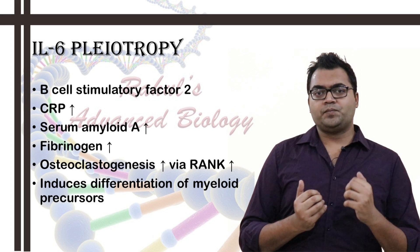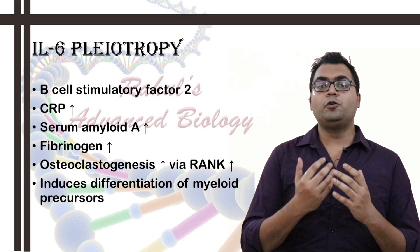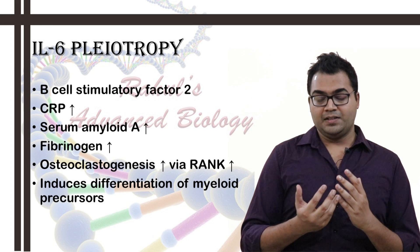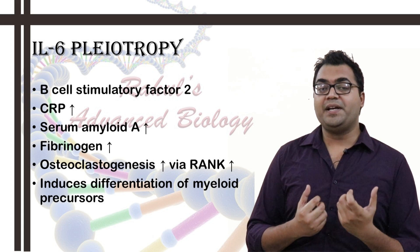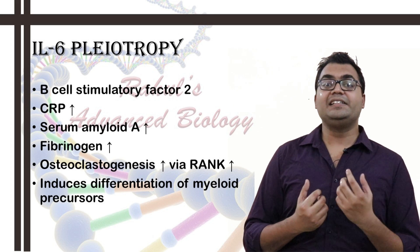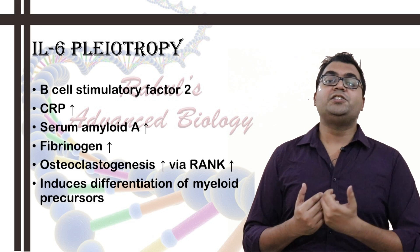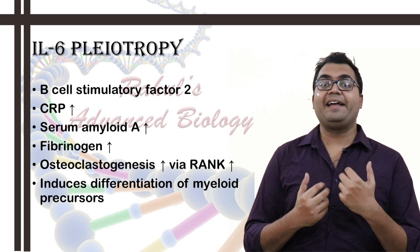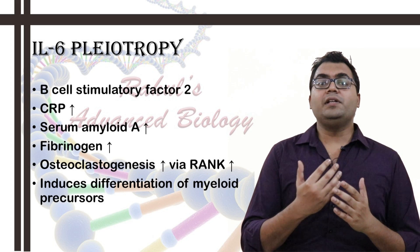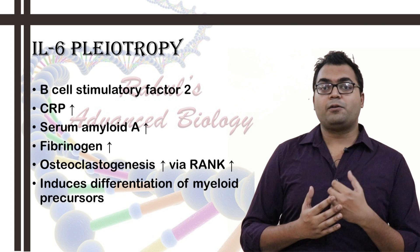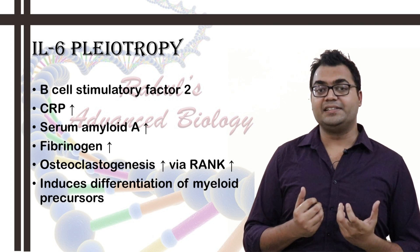IL-6 is also known to be a pleiotropic cytokine, meaning it can have diverse effects — like it could be a precursor for myeloid cells. It could enhance the expression of C-reactive protein, which is the biomarker of inflammation, and other inflammation biomarkers like serum amyloid proteins and fibrinogen. It can also up-regulate osteoclastogenesis, up-regulate the RANK-L pathway — receptor activator for nuclear factor kappa-B — and lead to inflammatory diseases like Crohn's disease, systemic lupus erythematosus, and rheumatoid arthritis.